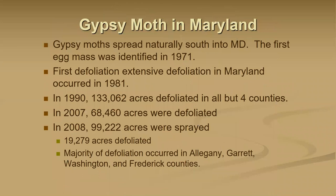In Maryland, Gypsy Moths spread naturally south, with the first egg mass identified in 1971 and the first extensive defoliation occurring in 1981. We had another outbreak around 1990. Over 133,000 acres were defoliated in 2007 and 2008 — 68,000 acres in 2007 alone. By 2008 the population was starting to crash, with only 19,000 acres defoliated. Most defoliation occurred in the western counties of Allegheny, Garrett, Washington, and Frederick.